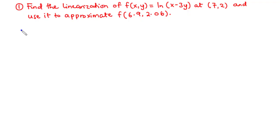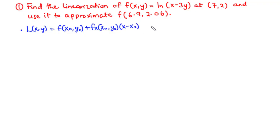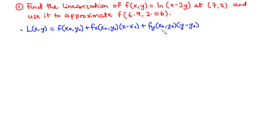Assuming that we have a function f(x,y) and this function is differentiable, the linearization of the function at the point (x₀, y₀) is given by L(x,y) = f(x₀, y₀) + fx(x₀, y₀)·(x − x₀) + fy(x₀, y₀)·(y − y₀), where fx(x₀, y₀) is the partial derivative with respect to x and fy(x₀, y₀) is the partial derivative with respect to y at that point.